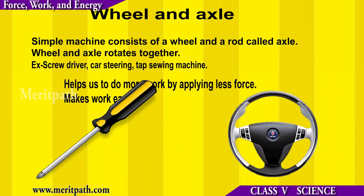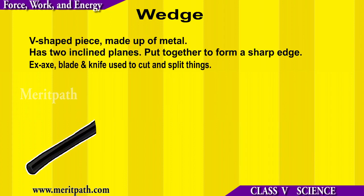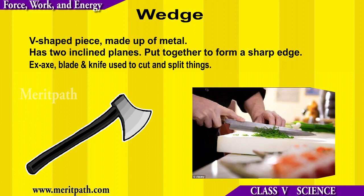A wheel and axle is a simple machine consisting of a wheel and a rod called an axle; they rotate together — example: a screwdriver. A wedge is a piece of material such as metal or wood which is thick at one edge and tapers to a thin edge at the other end, useful for splitting things — example: a knife.